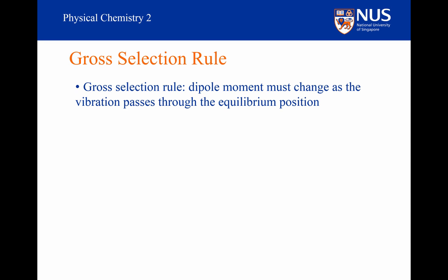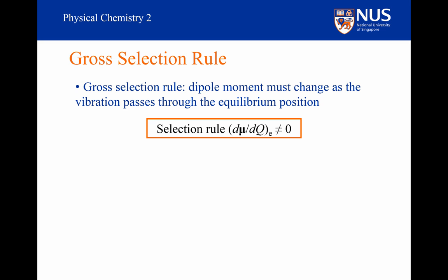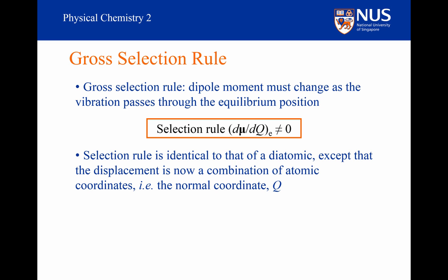The gross selection rule remains the same as that identified for diatomic molecules: the dipole moment must change as the vibration passes through the equilibrium position. Mathematically, this can be expressed as the gradient of the dipole moment with respect to the vibrational coordinate Q, evaluated at the equilibrium position, is non-zero. This selection rule is identical to that of a diatomic, except that the displacement is now a combination of atomic coordinates — that is, the normal coordinate Q.